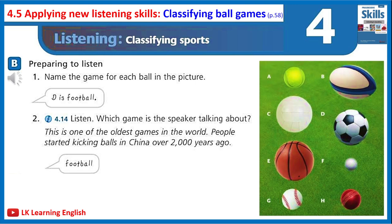Game descriptions: 1. People say the game began at a British school — children were playing football and suddenly one boy picked up the ball and ran with it. 2. A team game with five players on each side — you try to put the ball into a net with your hands. 3. You can play singles or doubles; you use a special bat with strings. 4. One of the oldest games in the world — people started kicking balls in China over 2,000 years ago.